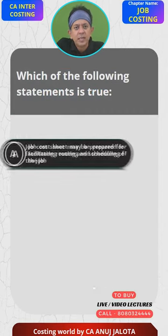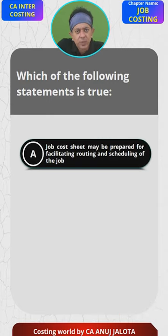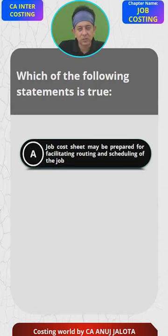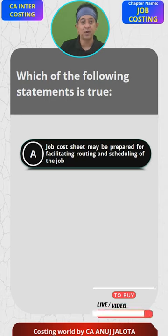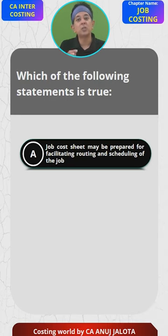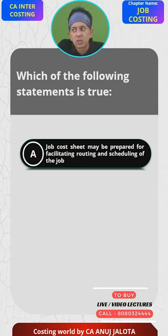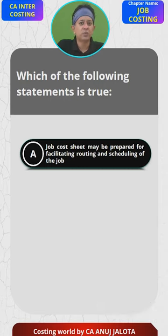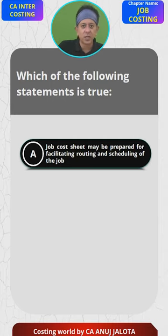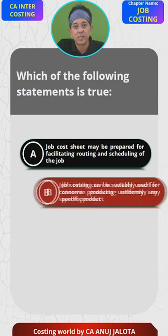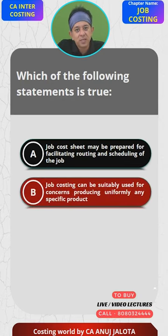Option A: A job cost sheet may be prepared for facilitating routing and scheduling of the job. This is false. A job cost sheet is prepared to find out the cost of a certain job, not how that job will be done. Routing and scheduling is about planning how the job will be done. Have you ever written on a job cost sheet that this job will be done at a particular time or by these workers? No. So that cannot be the answer.